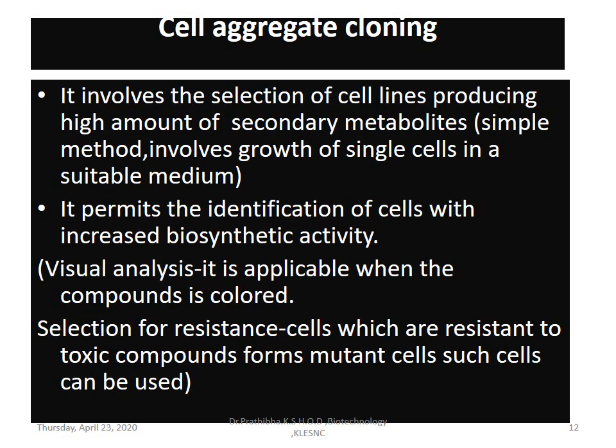Cell aggregate cloning is one of the processes of in vitro culture of cells. It involves the selection of cell lines producing high amounts of secondary metabolites. This technique is a simple method involving growth of single cells in a suitable medium. It permits the identification of cells with increased biosynthetic activity. Special techniques are devised to select cell lines for production of desired metabolites, separating producer cells from non-producer cells. The techniques employed include cell cloning, visual or chemical analysis, and selection for resistance.